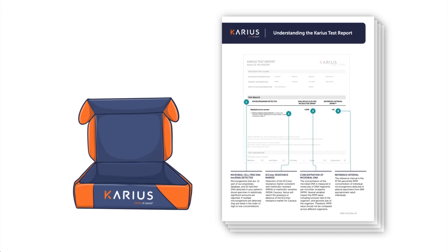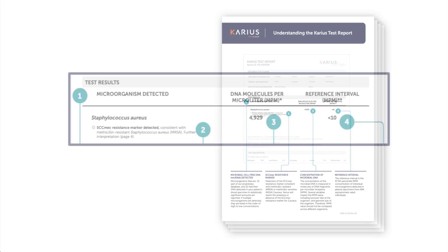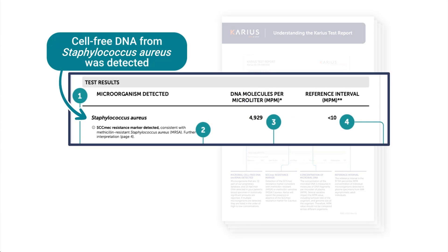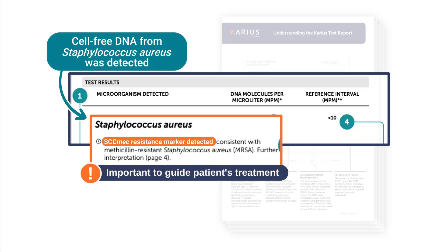Here is an example of what a Karius test report looks like. In this patient, MCF DNA from Staphylococcus aureus was detected. Genetic markers in the DNA are consistent with this strain of the bacteria being resistant to methicillin — important information to help guide the patient's treatment.